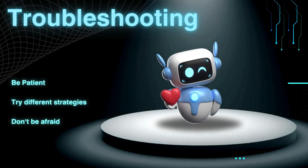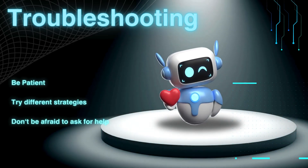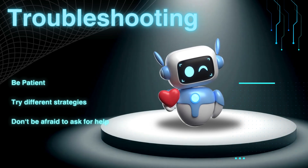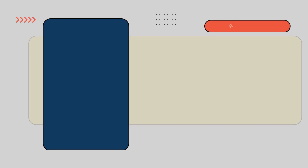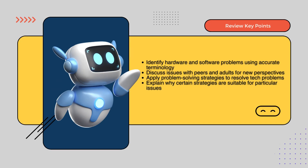Remember, troubleshooting is all about being patient, trying different strategies, and not being afraid to ask for help. Let's review the key points from today's troubleshooting lesson. Identify hardware and software problems using accurate terminology. Discuss issues with peers and adults for a new perspective. Apply problem-solving strategies to resolve tech problems.